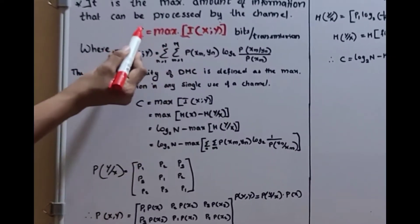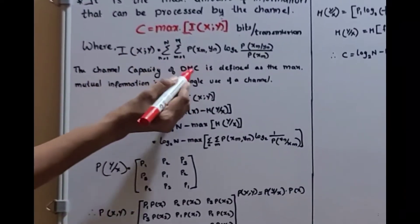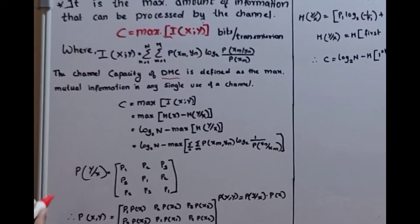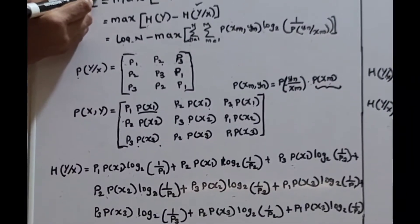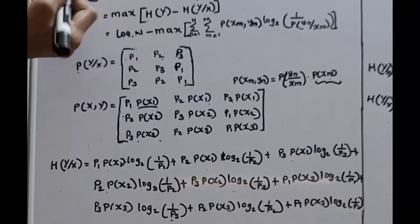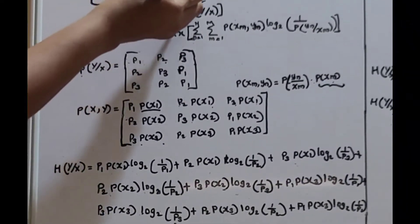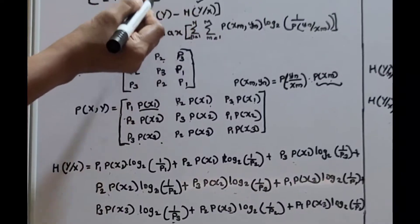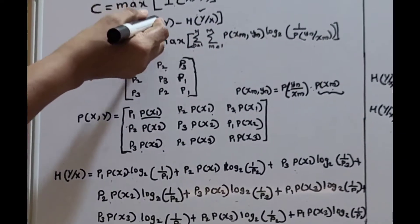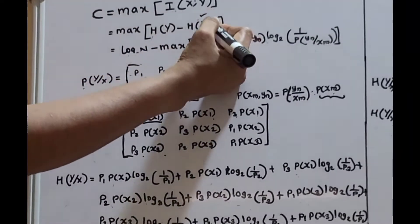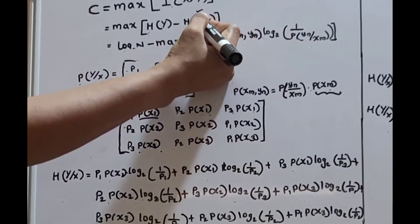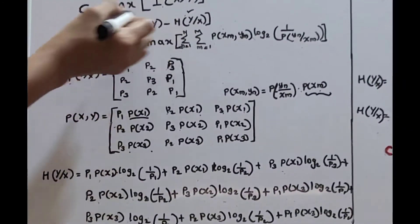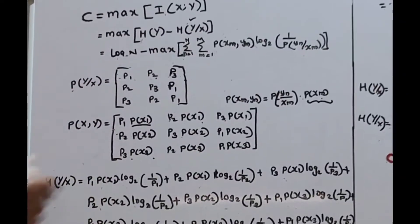From this equation, we can see that channel capacity of a discrete memoryless channel is defined as the maximum of mutual information in a single use of the channel. In this session, we are deriving the equation for channel capacity. C equals maximum of I(x;y), which is maximum of mutual information. We have the equation for mutual information as H(y) minus H(y|x). We have the conditional probability matrix, so we are using H(y) minus H(y|x). By expanding this, we get maximum of H(y) minus maximum of H(y|x).